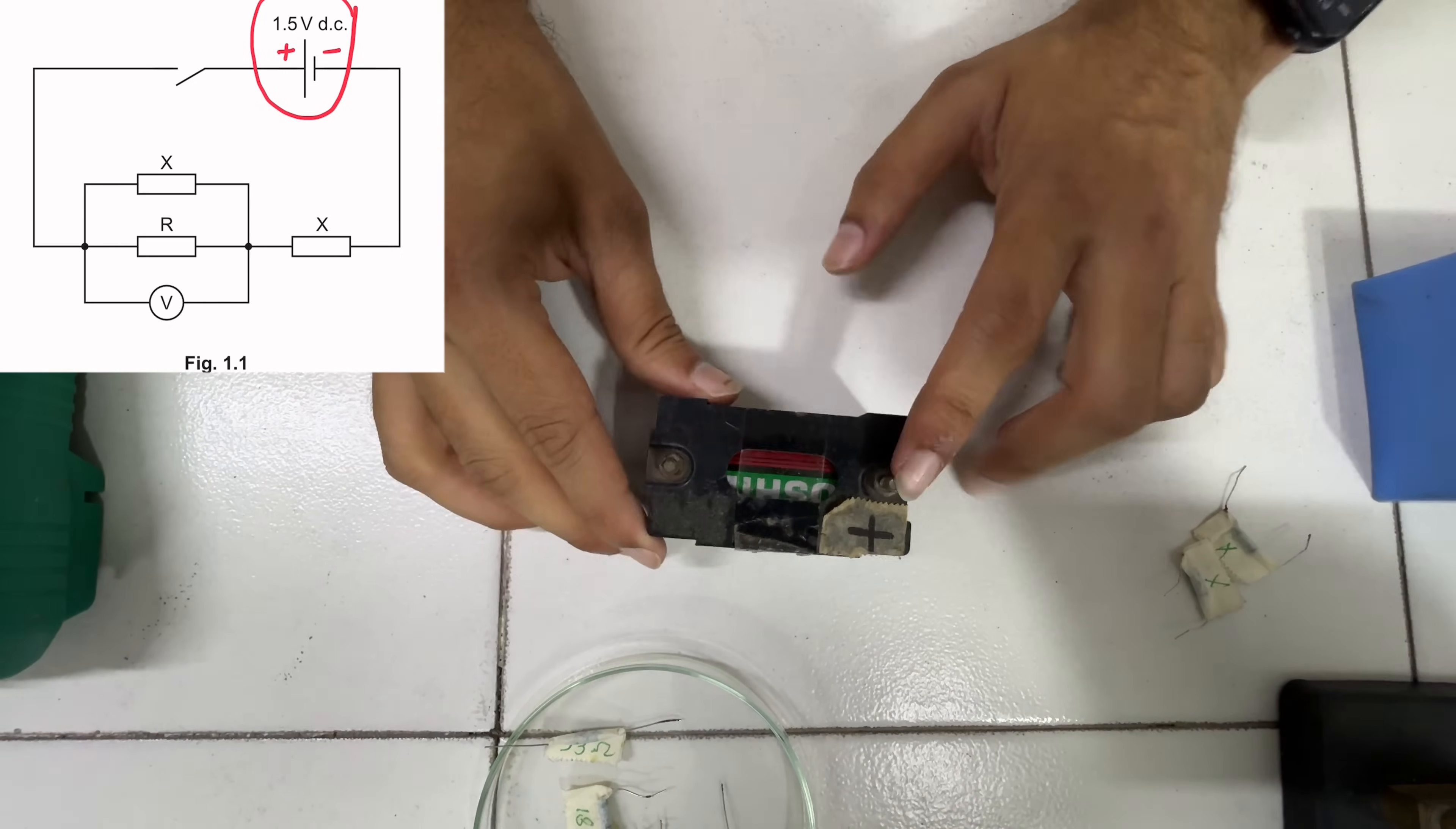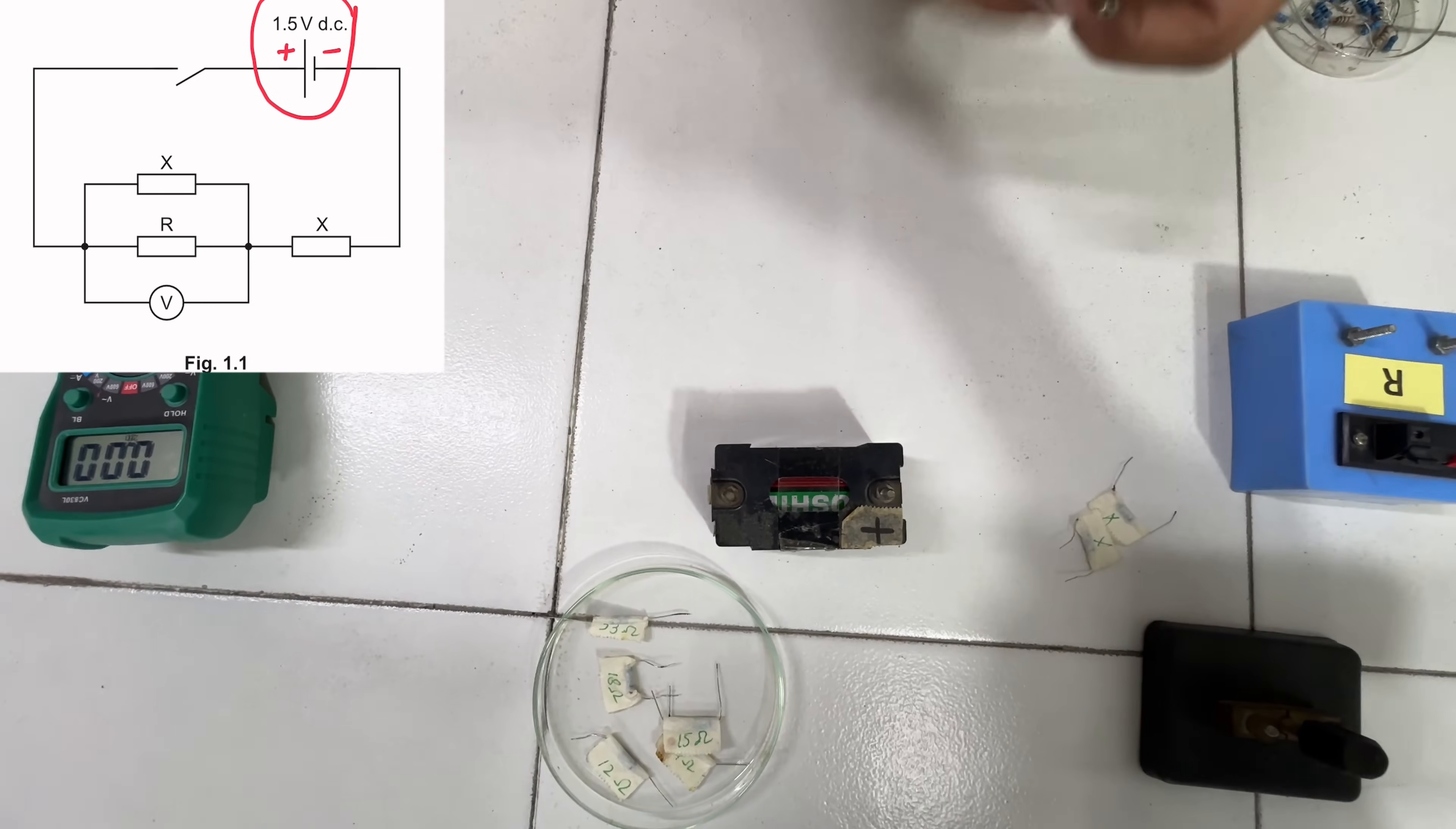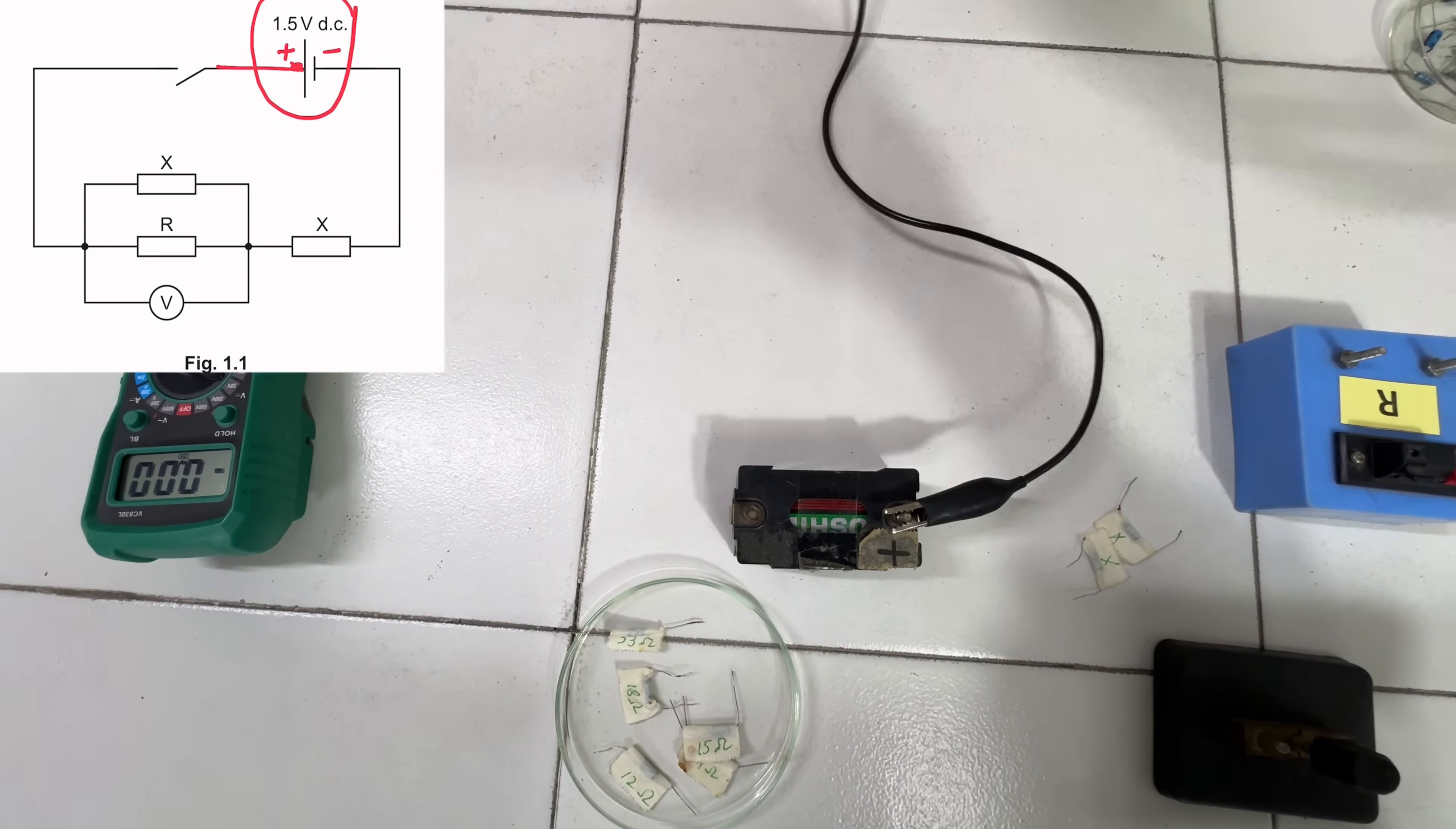Generally when you see a battery it has a positive terminal already marked and you don't need to do anything. There are connections here. As you can see from the battery, we will connect first this crocodile clip, so you connect the crocodile clip on the terminal. Just leave it as it is, you don't need to do anything else.